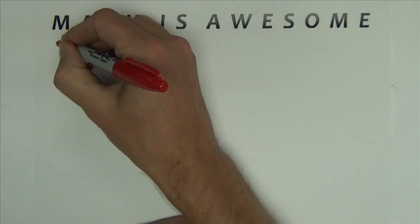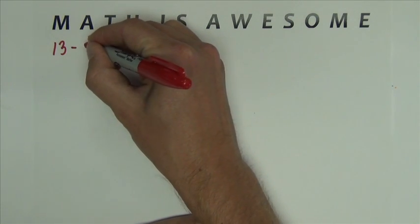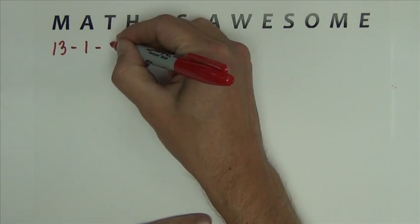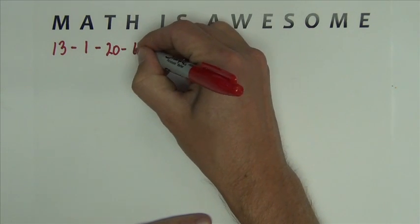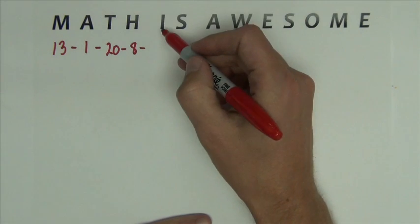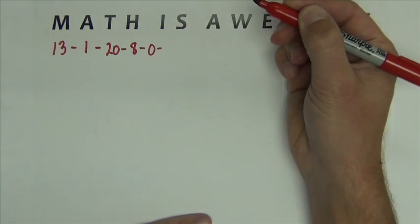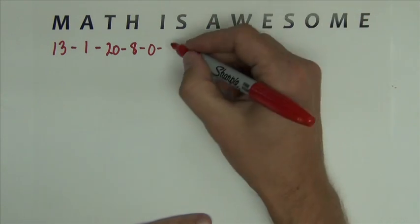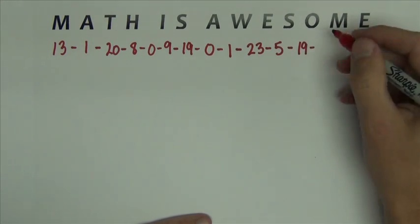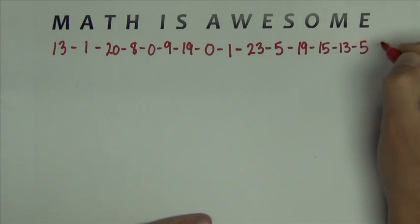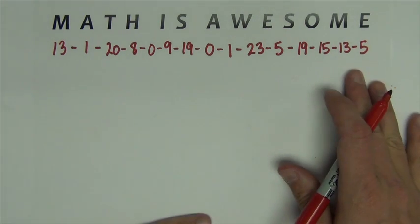For example, M is 13, A is 1, T is 20, H is 8. And between the word math and is there is a space so I'm going to add a zero. And just continue doing this until you've got the whole message. So it should look like that. I've got my string of numbers.